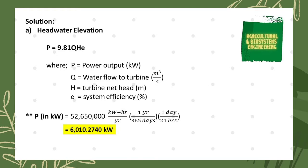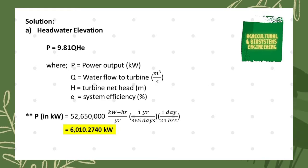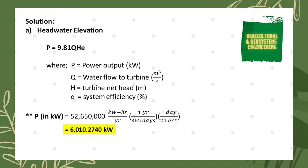First, we need to convert our power output into kilowatts because our consumption has units of kilowatt-hours per year. We remove the time unit using the conversion factors: one year equals 365 days and one day equals 24 hours. The year and hour units cancel, leaving kilowatts only. This gives us a power output of 6,010.2740 kilowatts.